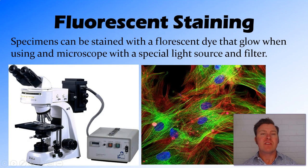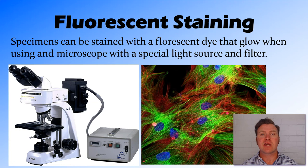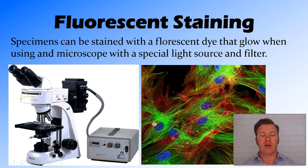One of the stains we now have is a fluorescent stain. This is a stain that, when using a very special mercury lamp light source, causes the cells to fluoresce or glow. On a dark background, this gives us great information about the internal structure of cells.